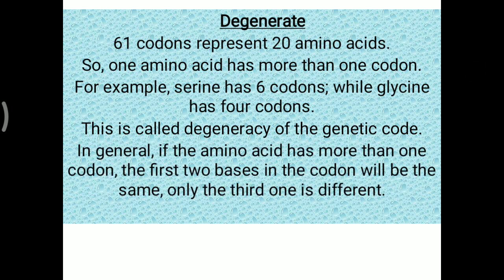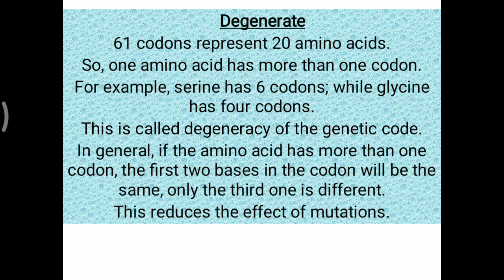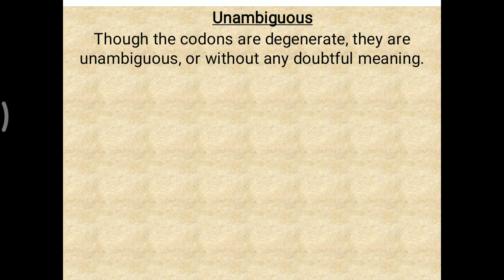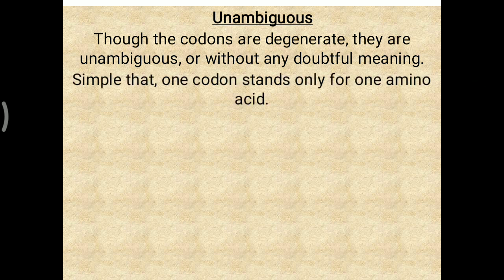In general, if an amino acid has more than one genetic codon, the first two bases in the codon will be the same. For example, UUU and UUC both code for phenylalanine — UU is common, only the third base differs. This reduces the effect of mutation and is advantageous. Unambiguous: though codons are degenerate, they are unambiguous — one codon codes for only one amino acid; UUU codes only for phenylalanine, not alanine or glycine.